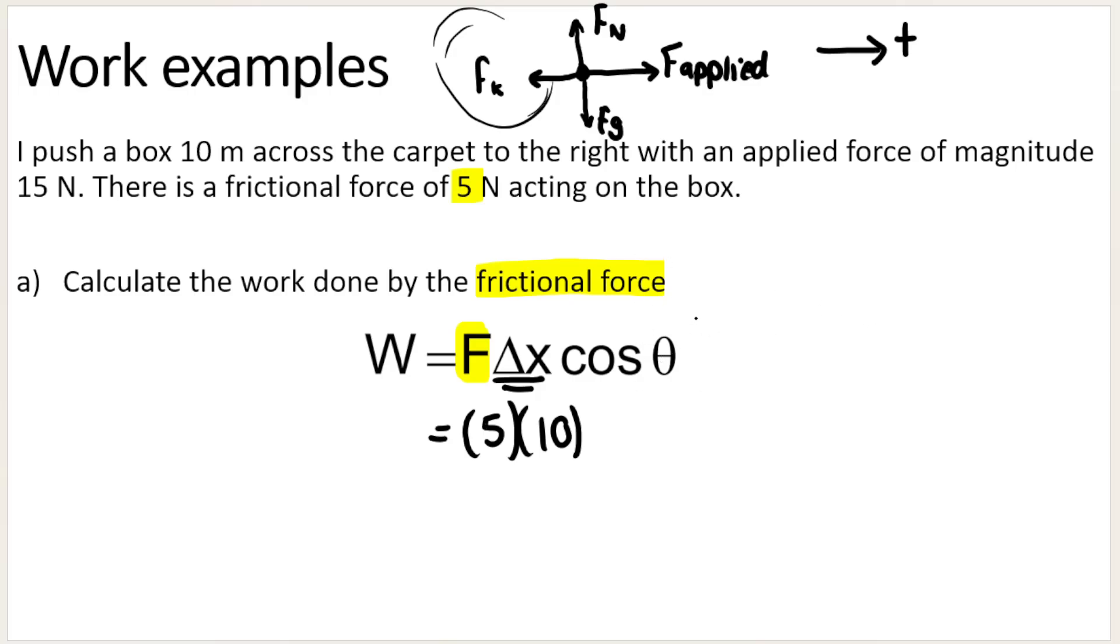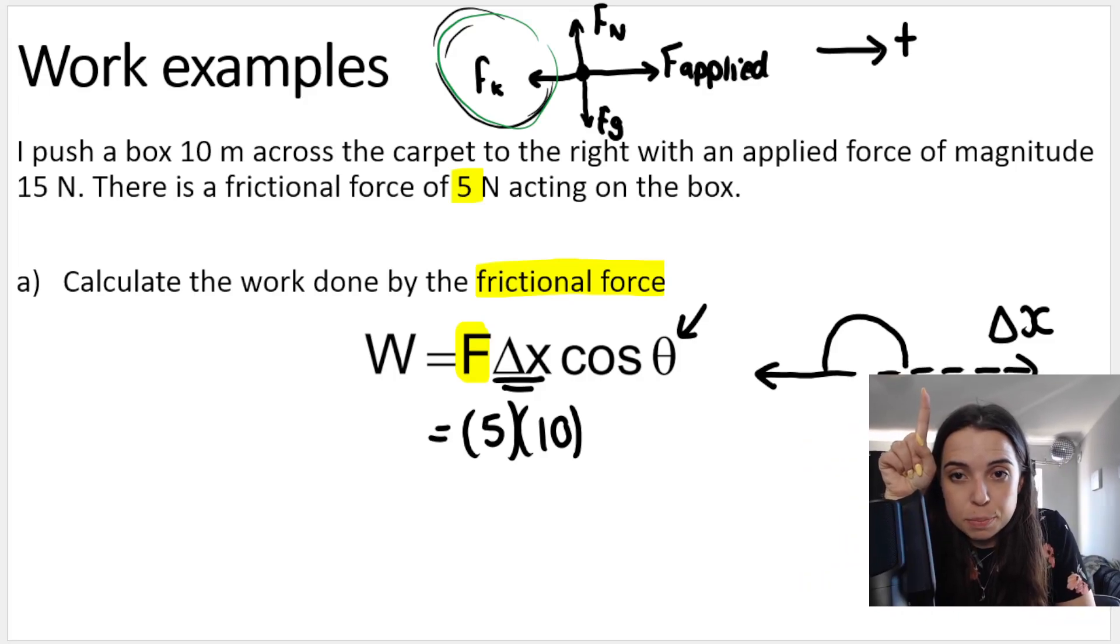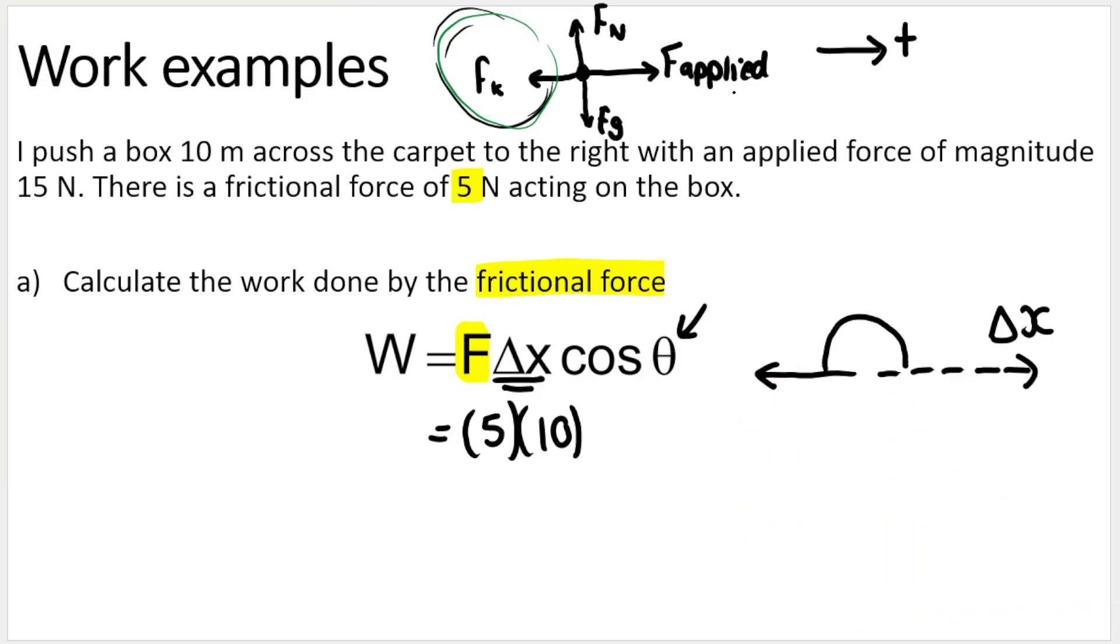And now the angle. Remember the angle, this angle over here, is the angle between the displacement—so where did I move? I moved to the right—and which way is friction acting? Take a look at your free body diagram. Friction is acting to the left like this. What angle is between these two things here? Well, this is a straight line over here. So the angle between the displacement and the frictional force is 180 degrees. So we're going to say cos 180, and for those of you that know your trigonometry, you'll know that cos 180 is negative one.